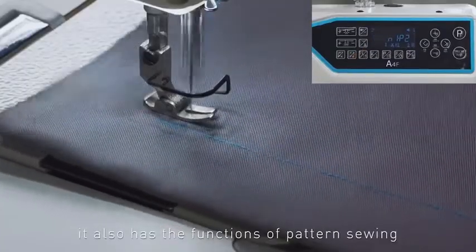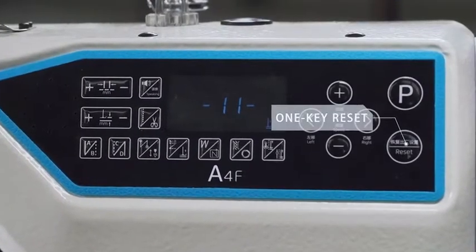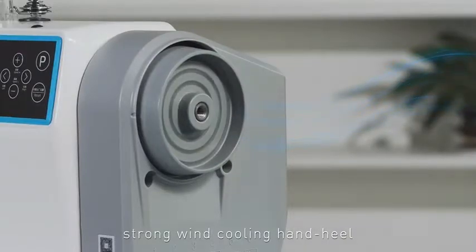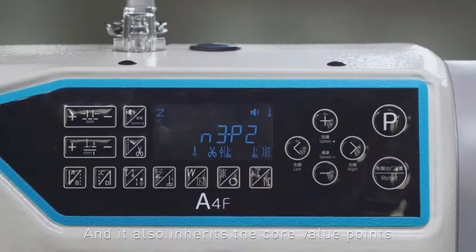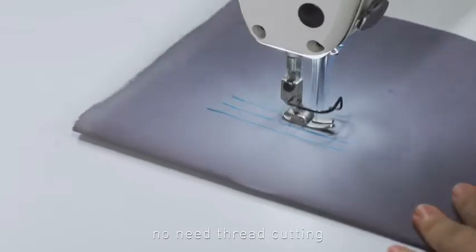The machine also features pattern sewing, one-key reset, one-shaft transmission, strong wind cooling hand wheel, USB port, and more. It inherits Jack's core values such as auto-speaking and no-need thread cutting.